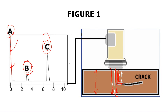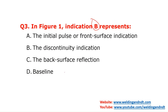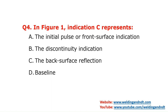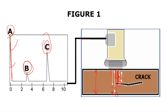Question number three: indication B represents the discontinuity indication. We cannot call any discontinuity a defect — only those discontinuities which exceed the code limit are called defects. Therefore, we call it a discontinuity here; if it exceeds the code limit, then we can call it a defect.